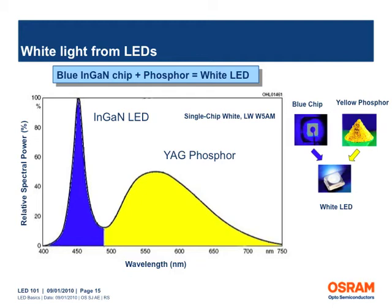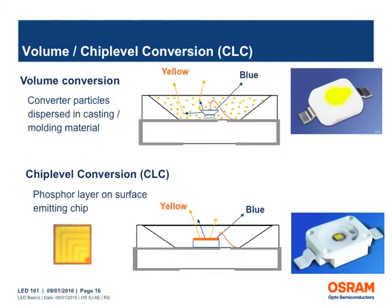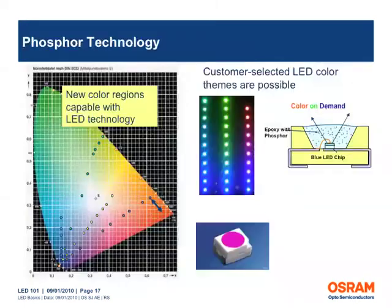The phosphor layer absorbs a portion of the blue light and emits light at longer wavelengths. The phosphor concentration defines how much of the blue light is upconverted. Volume conversion involves the dispensing of phosphor particles into the transparent molding material. An alternative method is chip level conversion, in which a phosphor layer is placed on top of the LED chip. The advantages of chip level conversion include better color homogeneity, higher luminance and less color variation over angle. In addition to white light, new color regions can be achieved by employing different phosphors.